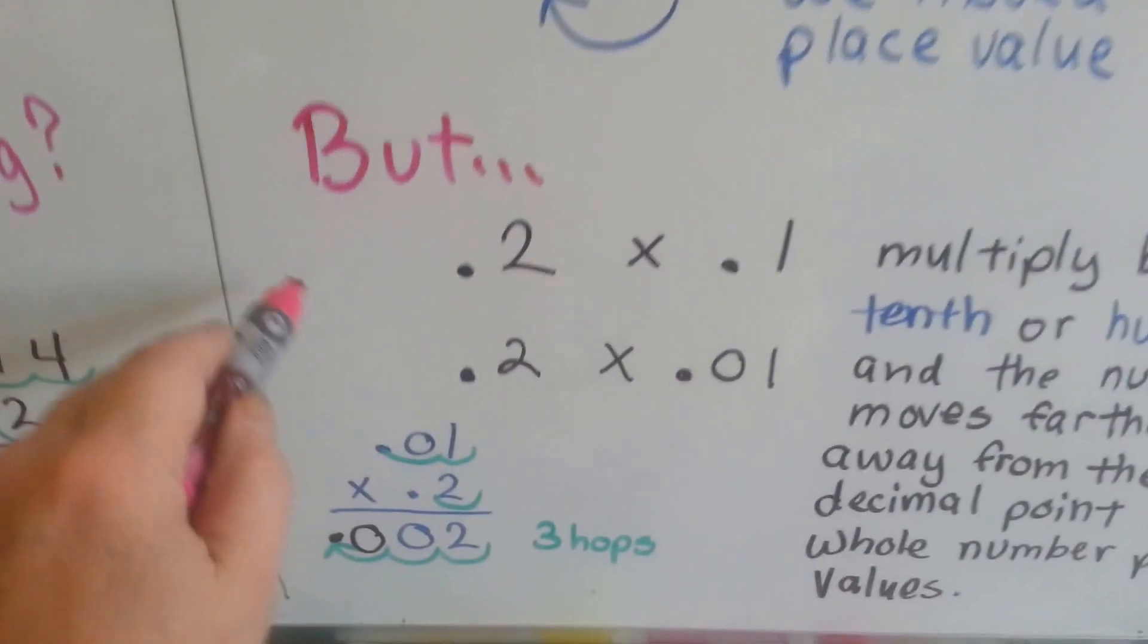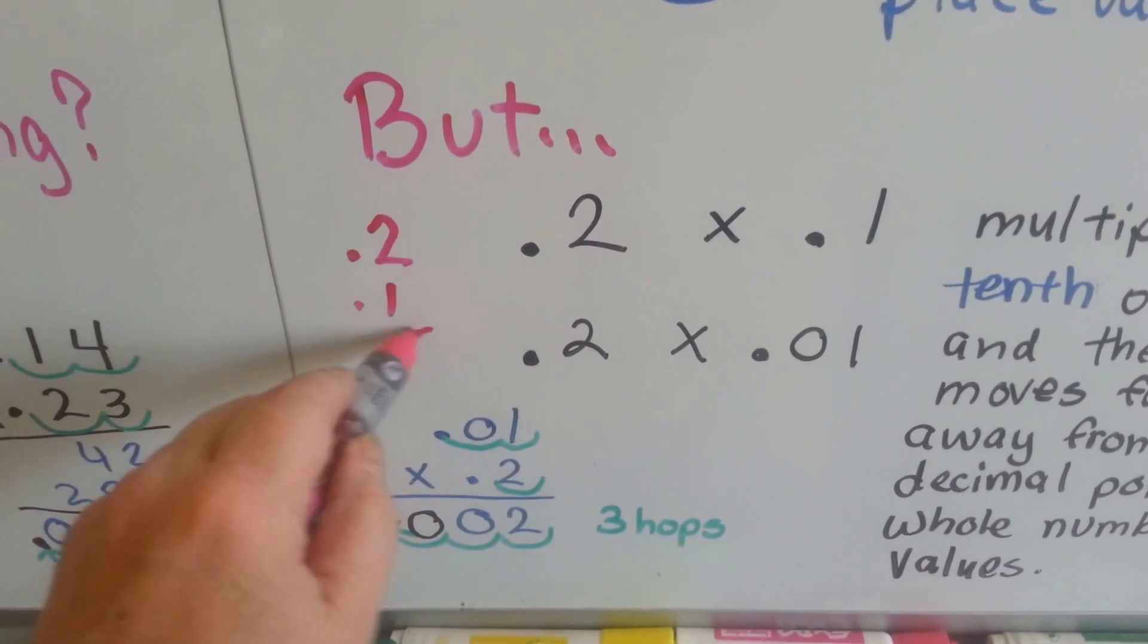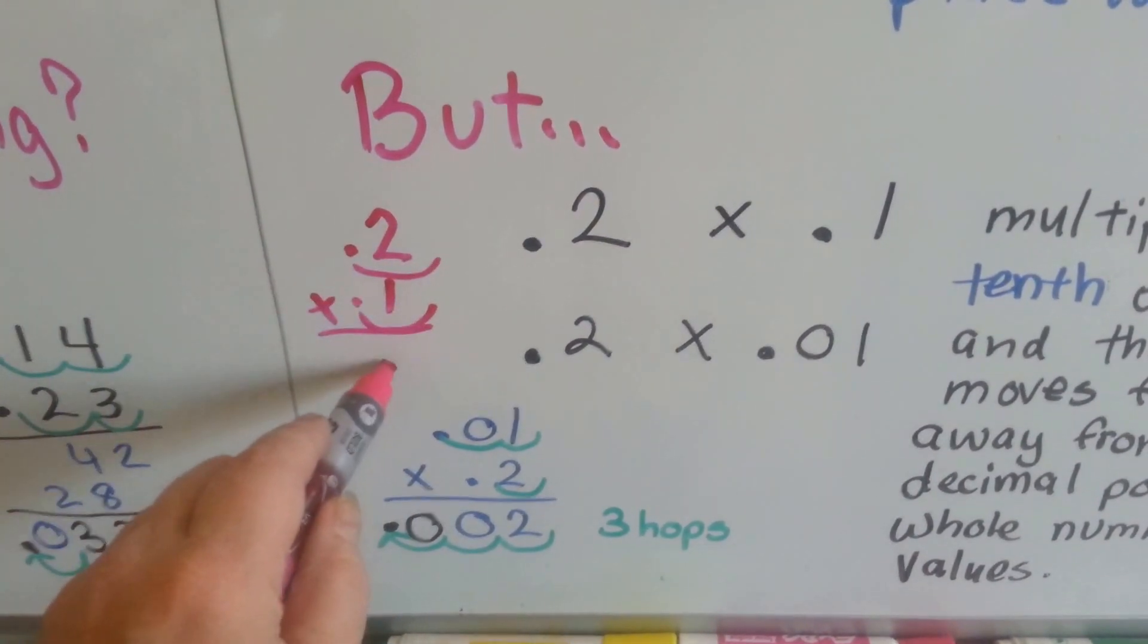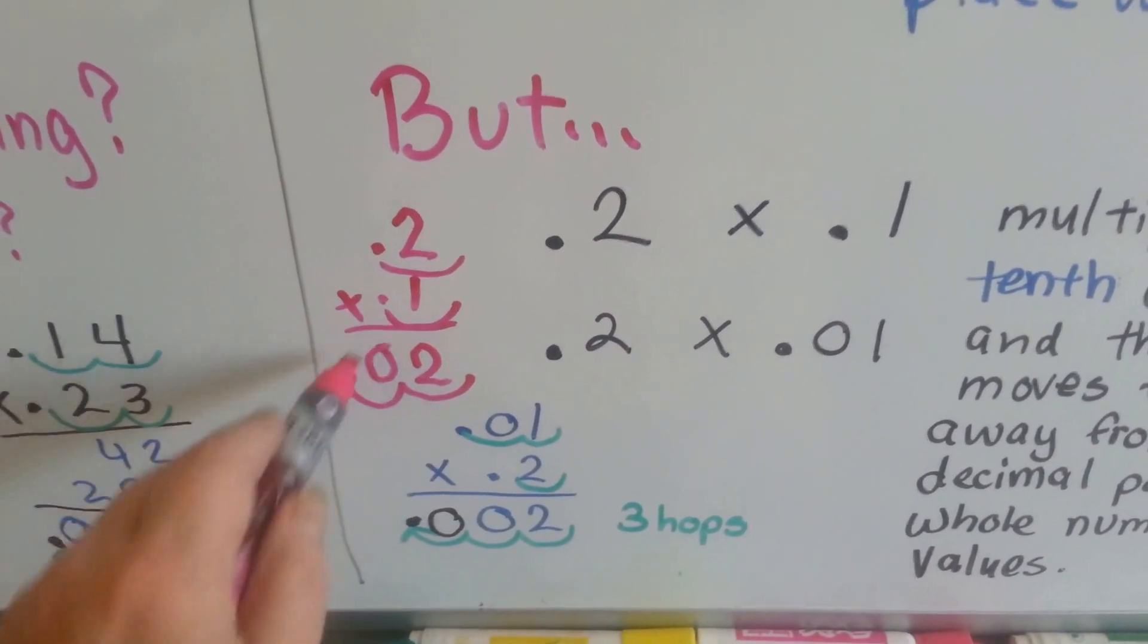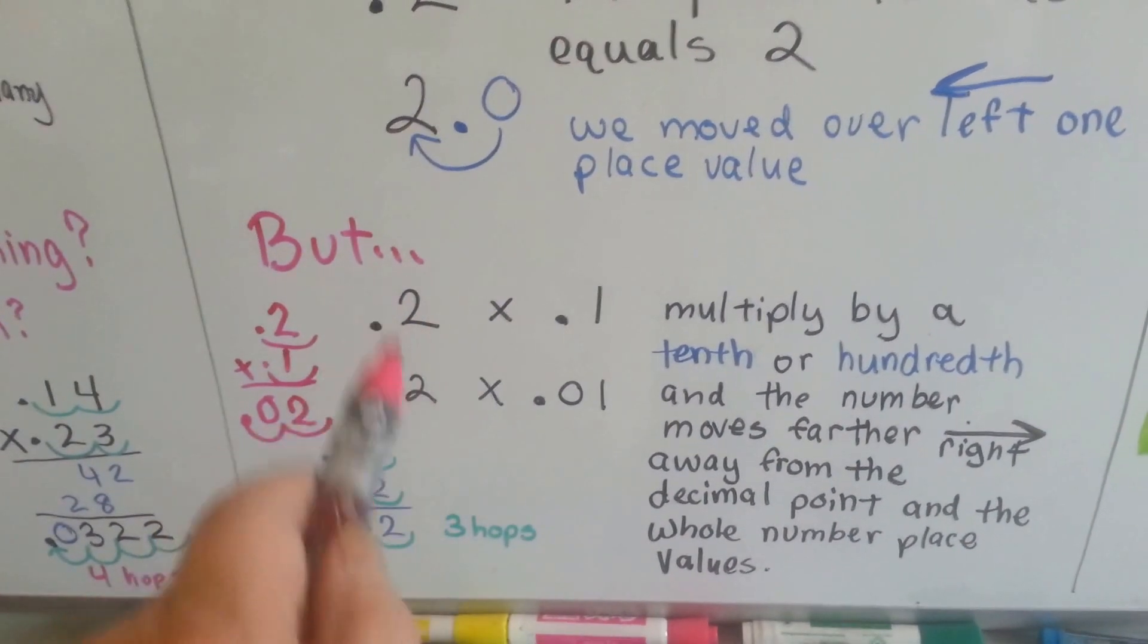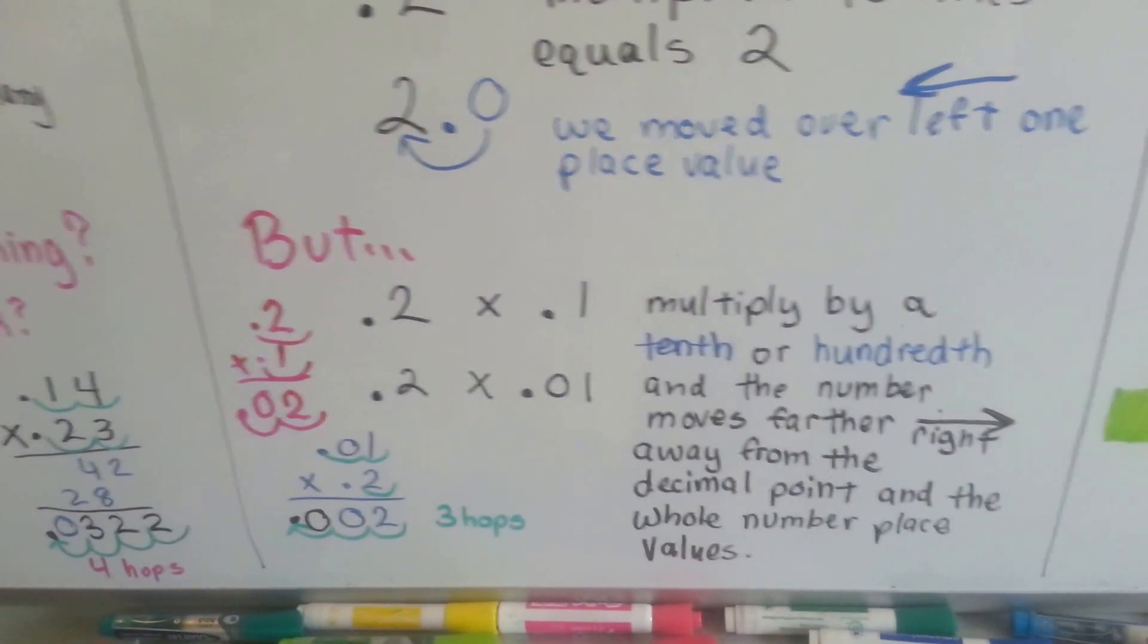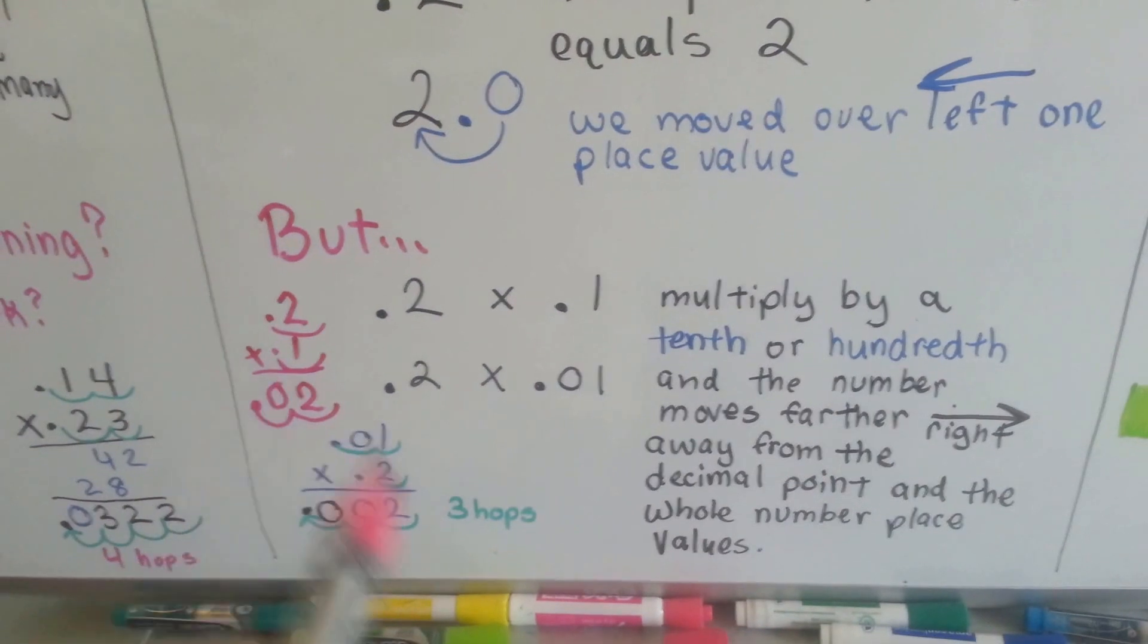This becomes 2 hundredths because we've got 2 hops. 1, 2. So when we put our 2 down here, we've got to hop twice. Look at that. So when you see a hop and a hop, before we even write the answer, we can just look at this and say, I see 1 hop and 2 hops. There's going to be 2 hops in the answer.